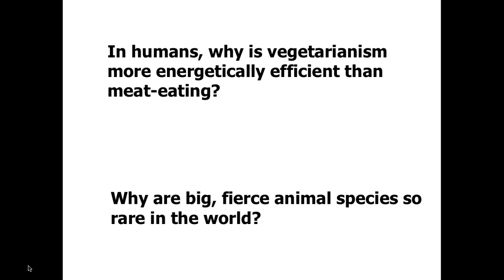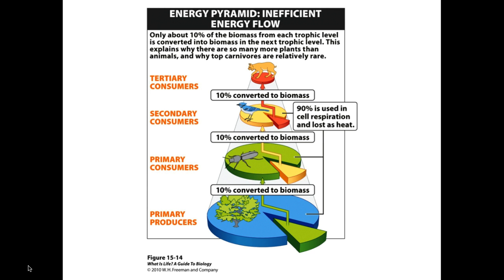We lose 90% of the possible energy available to us by eating the cow rather than the plants themselves. Big, fierce animals are rare because they eat smaller, less fierce animals, which are less efficient energy sources than plants. As you recall from the pyramid, you can only have a small number of top-level consumers because there simply isn't enough energy reaching them through their prey animals. We see this graphically represented in a series of pie charts — because of cellular respiration, digestion, and various inefficiencies throughout biological life, only 10% is converted to the next phase.